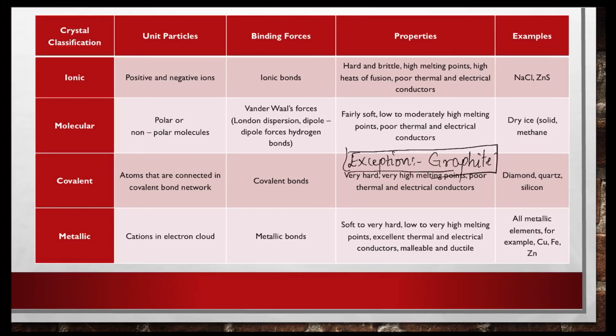However, there is an important exception: graphite. Graphite is a covalent solid but it is very soft and has very high thermal and electrical conductivity, due to its unique layered structure studied in Class 11 s-block elements. Examiners may ask why graphite being a covalent solid does not show the typical properties — the answer lies simply in its structure.